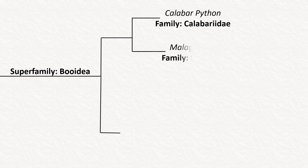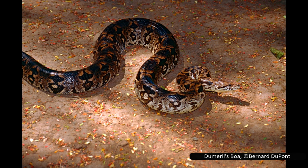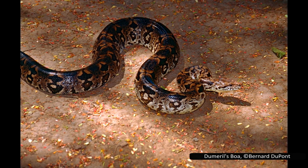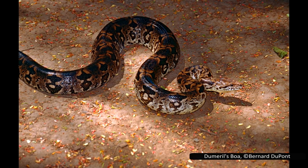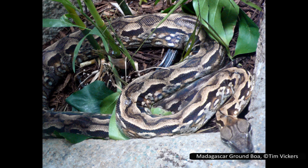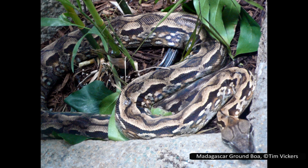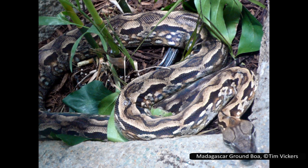The next family is Sanziniidae, or the Malagasy boas — four species across two genera, endemic to Madagascar. Like Calabaridae, they also used to be a subfamily of the true boas but were later determined to be more distantly related. Like all boas, they are non-venomous constrictors. The species in this family are diverse in habitat and behaviour, ranging from semi-arid and terrestrial to tropical and arboreal to living in shrubs near waterways, and range in size from 1.5 metres or 4 feet to 3 metres or about 10 feet.